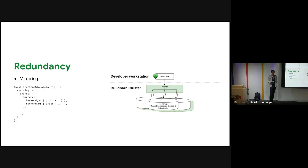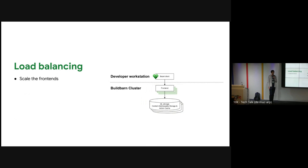We also add redundancy — mirroring is a good one — and you see the configuration grows a bit. For load balancing, if you have three storage nodes, maybe your frontend can't cope with the load. So let's scale the stateless frontend very easily in Kubernetes if you use that.